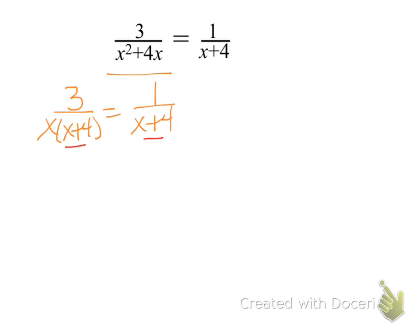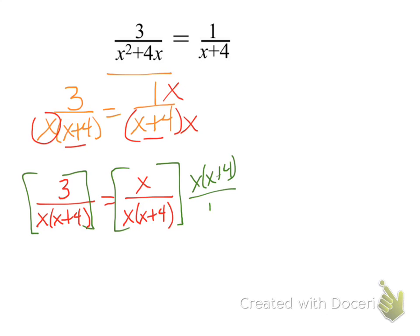And now if you notice, both of these denominators have a factor of x plus 4. This first denominator has a factor of x. We can remedy that by multiplying the other side of the equal sign by the numerator and denominator, x over x. We're multiplying by 1, we're not changing the value of anything. And if we were to multiply both sides of this equation by x times x plus 4, the x and the x cancel on the left, and the x plus 4 and the x plus 4, 1 on the numerator, 1 on the denominator cancel. So we're left with just 3.